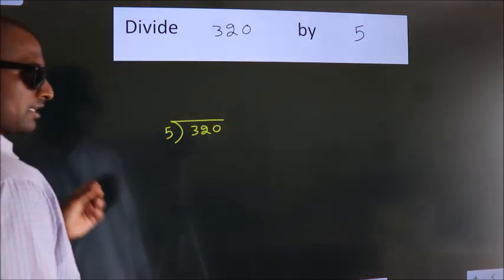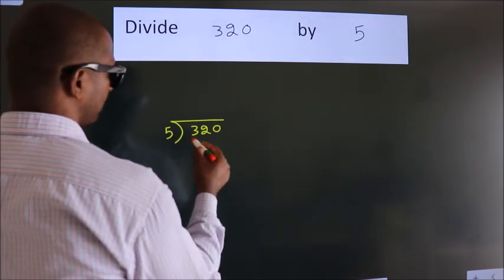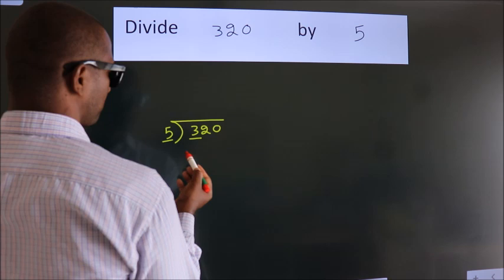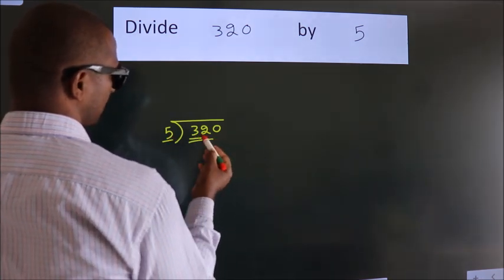This is your step 1. Next, here we have 3, here 5. 3 smaller than 5. So, we should take 2 numbers, 32.